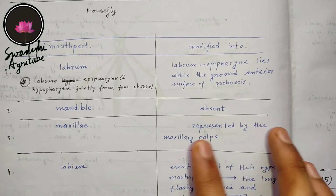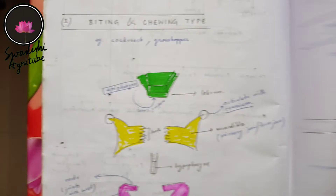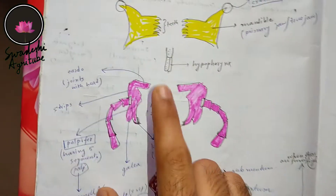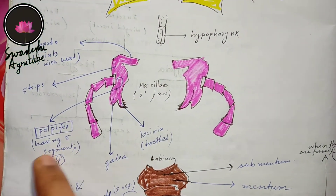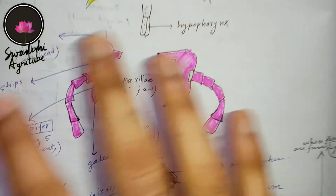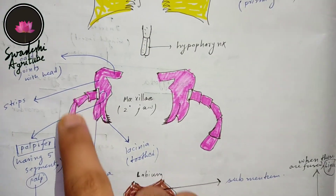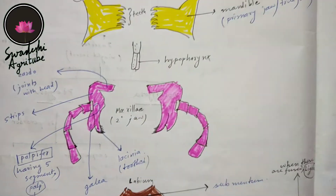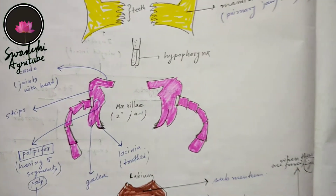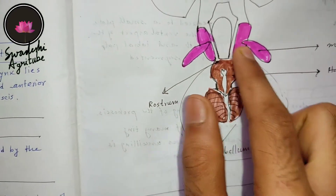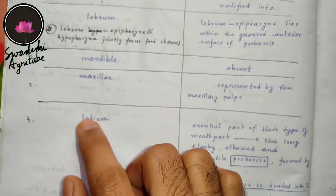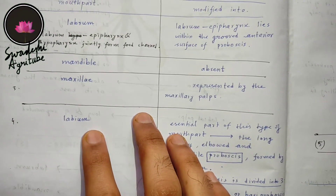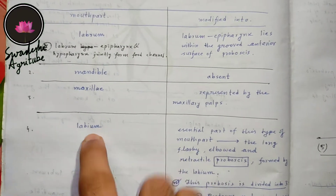Talking about the maxilla, it is only represented by the maxillary palp. You can remember that the maxilla has a complex structure — cardo, stipes, palpifer with palp, lacinia, galea — all are absent. Only the palp remains. The maxilla is only represented by the palps, shown here in pink color.